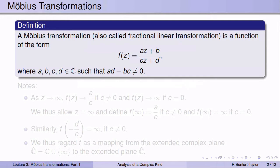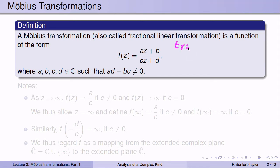Let's start with a definition. A Möbius transformation is also sometimes called a fractional linear transformation, and it is simply a function of the form f(z) = (az + b) / (cz + d), where a, b, c, and d are complex numbers such that ad - bc ≠ 0. For example, f(z) = (3z - 4) / (z + 15i). In this case ad, which is 3 × 15i, minus bc, which is 4, is not equal to zero, so this is a Möbius transformation.